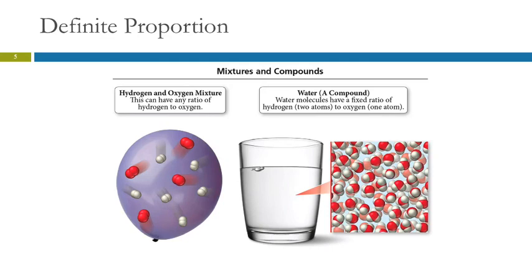In this mixture, we see that there are two different kinds of particles: hydrogen molecules and oxygen molecules. We could add some more hydrogen, we could add more oxygen—we can vary the proportions.